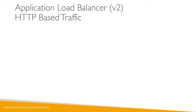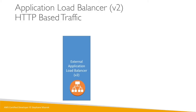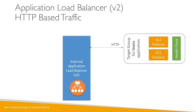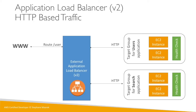In the diagram, we have HTTP-based traffic hitting an external Application Load Balancer v2. There are target groups — for example, a Users application target group with EC2 instances and health checks defined. If a user requests the /user route, the load balancer redirects to that target group. A second target group can be set up for, say, a Search application with its own EC2 instances and health checks; requests to /search route get redirected to the Search target group. You can have as many target groups and EC2 instances as you want behind your ALB.